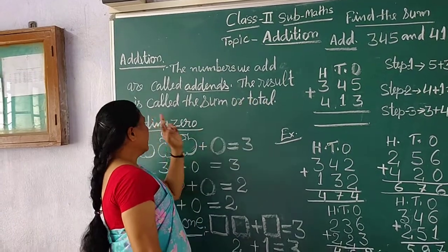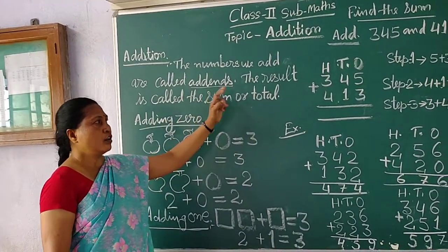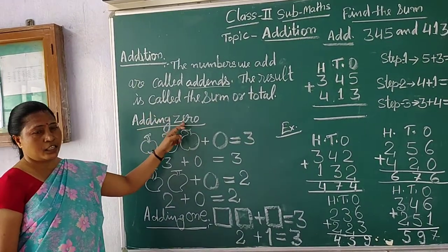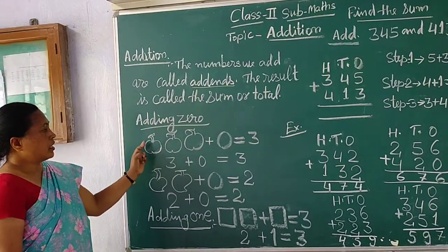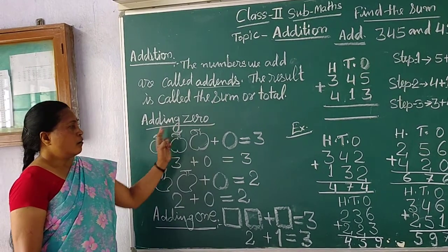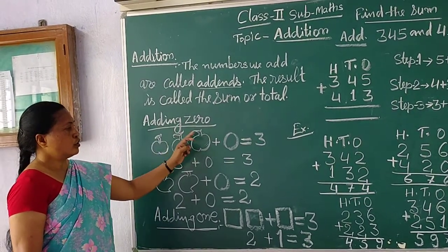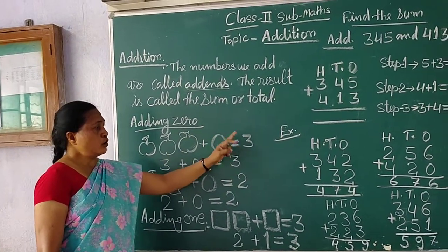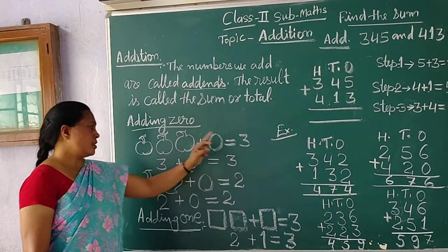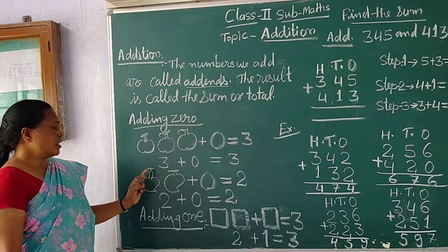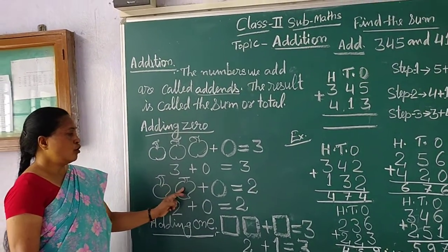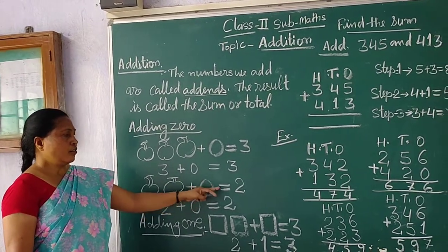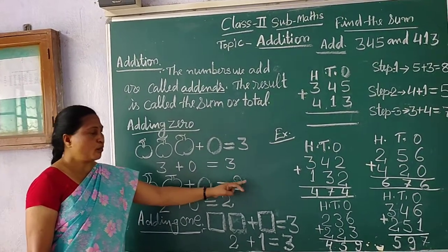The rule is called the sample total. We add zero. Here three apples: one, two, three, plus zero, equal to three apples. And next: one, two — two mangoes plus zero, equal to two mangoes.